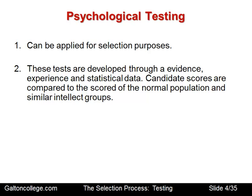Candidates are compared to the scores of the normal population and similar intellect groups. Candidates can be tested on a range of areas and the results compared with the population or some relevant group if the data is available. It's important that some sort of benchmark is in place so that when the candidate is tested, the results are known as favourable or not. The ideal standard is to compare results with the general population, which gives the employer insight into the suitability of the candidate.